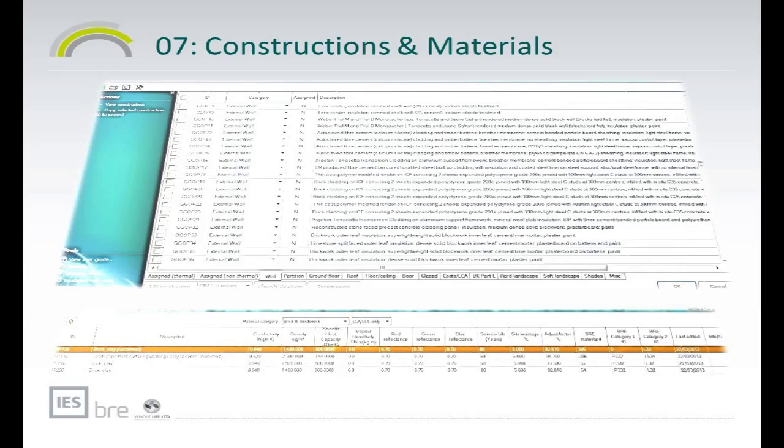The datasets which you subscribe to are really broken down into two elements. You've got constructions or elements — these are external walls, glazing systems, floors — and you have materials, which are the sub-elements that make up an element, such as bricks, mortars, and insulation. You can choose to have constructions for concept stage, and when you go into the much more detailed design stage of your project, you're able to create whichever bespoke constructions from the extensive material database that's available to you.